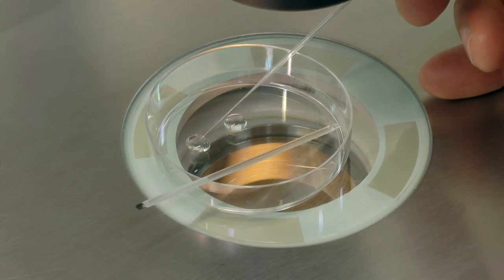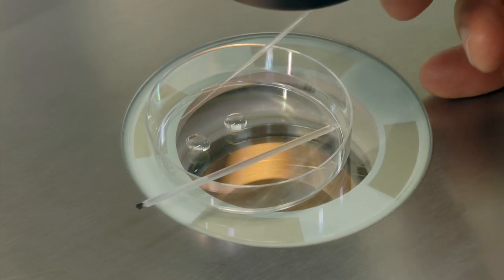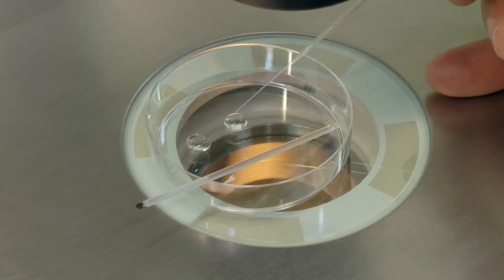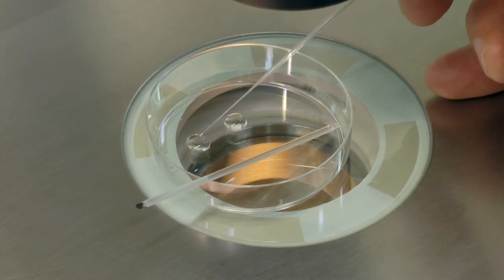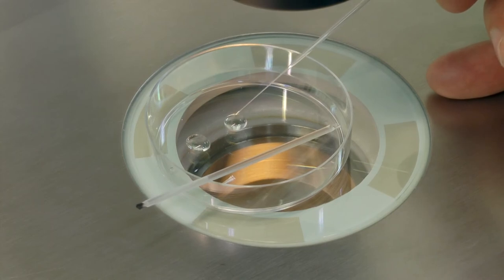Prime the pipette with the third solution and move your blastocyst from the second solution into the first droplet. Empty your pipette outside of the droplet and prime it again from the second droplet. Move your blastocyst immediately from the first droplet into the second droplet.